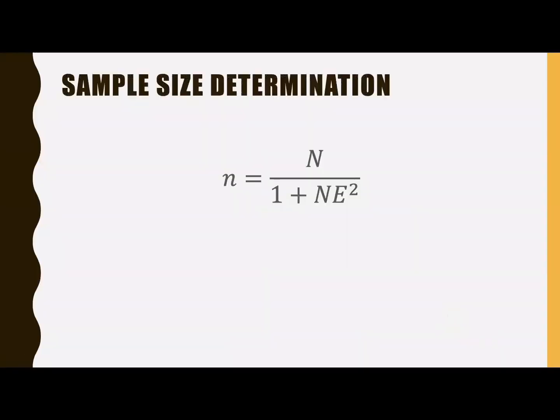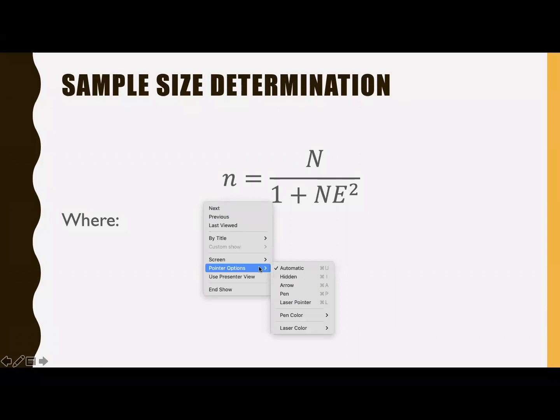Sample size determination commonly used in research is the Sloven's formula. n or sample is equal to N the population divided by the quantity 1 plus the population multiplied by the margin of error squared.